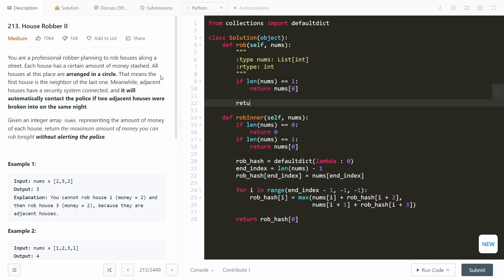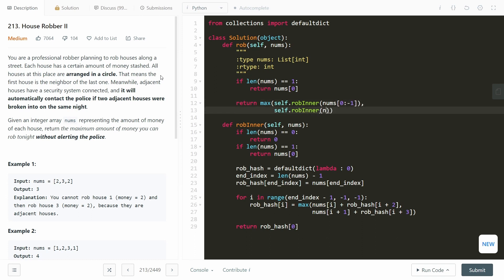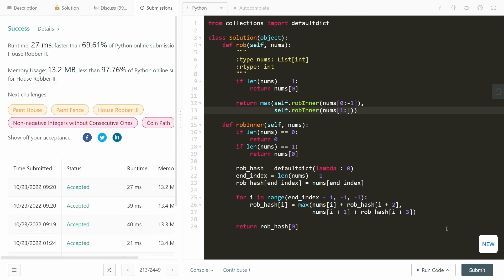If not we're going to return the maximum of self robinner with nums considering the first element all the way up until the second last element and we're going to consider robinner of nums from the second element all the way up until the last element. And that's all there is to it.